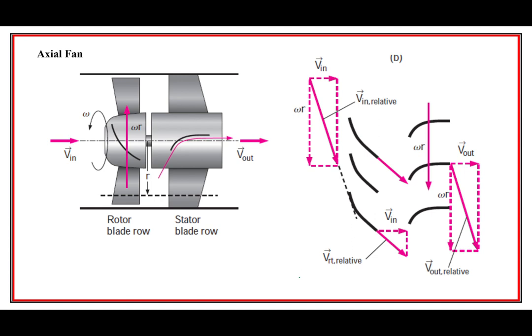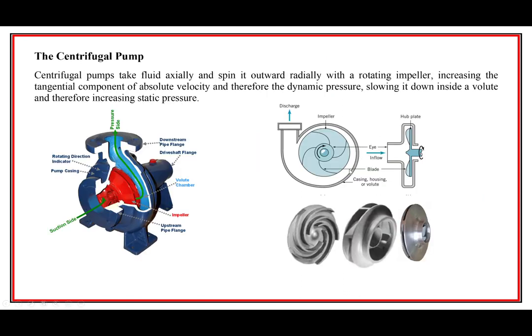I'm not going to cover axial flow much, only to say that some fans have stators - a rotating part and a stationary part - to capture the outlet velocity and convert it into increased flow pressure. We're going to stick with the centrifugal pump, and I'll have an example in the next video. I'm already at the 20-minute mark, so see you in the next video.